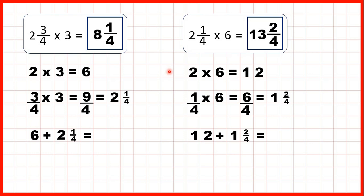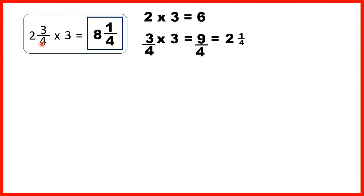Now let's think about why this method works — why we can split the mixed number up, multiply the whole number, then the fraction, and then add up our answers. For the first question, 2 and 3 quarters times 3: we worked out 2 times 3 is 6, 3 quarters times 3 is 9 quarters which is 2 and 1 quarter, and then we added 6 and 2 and 1 quarter to get our answer.